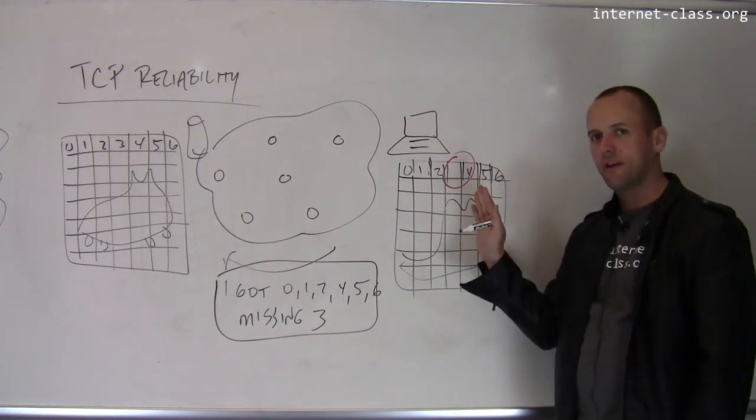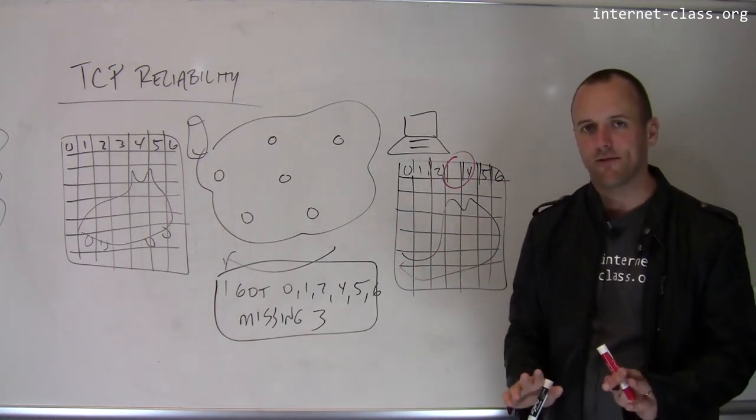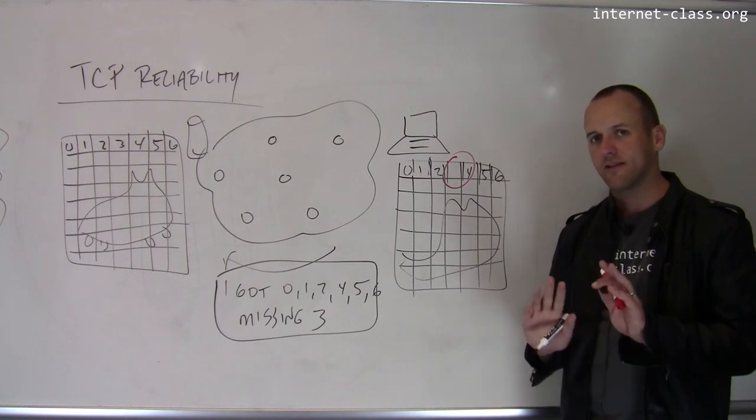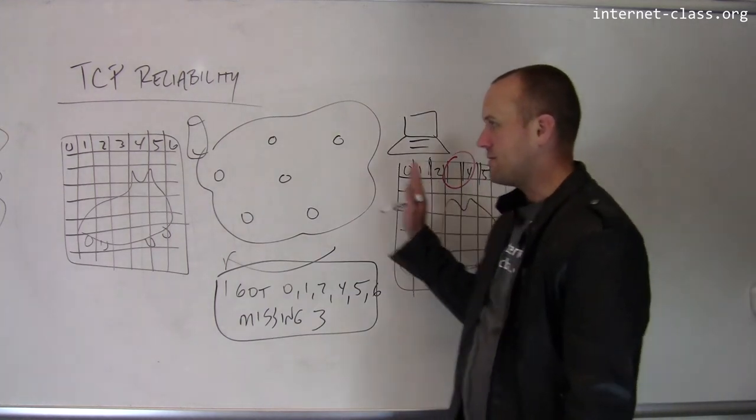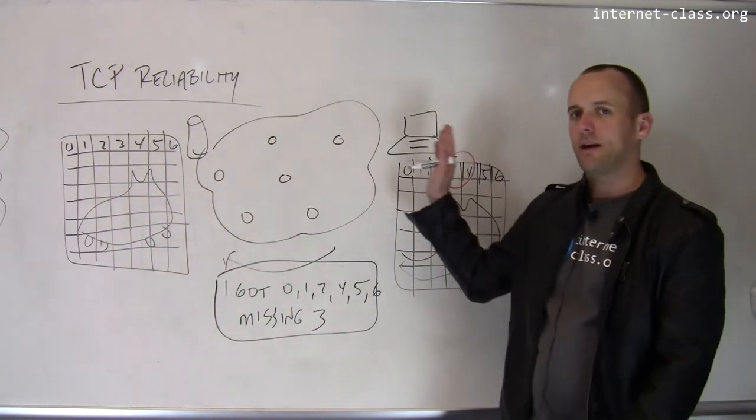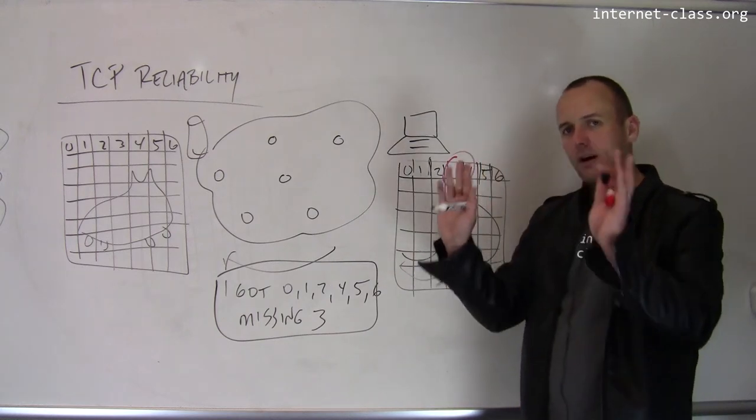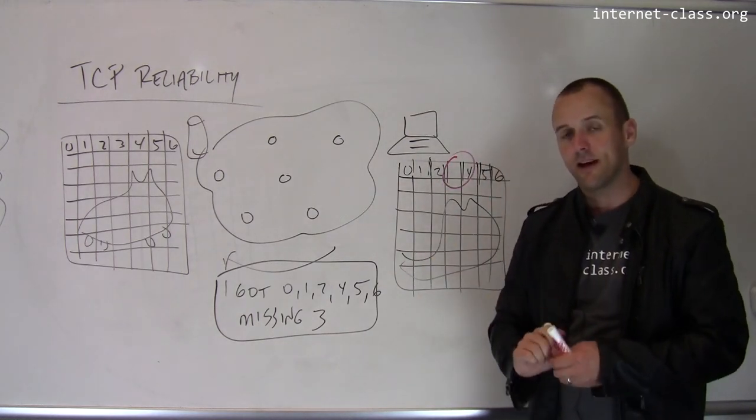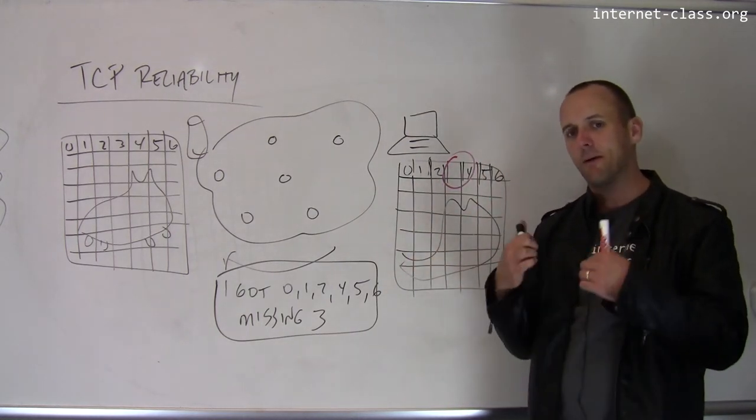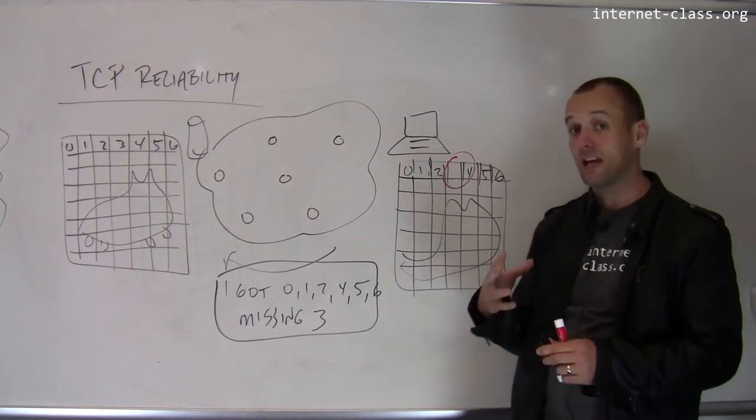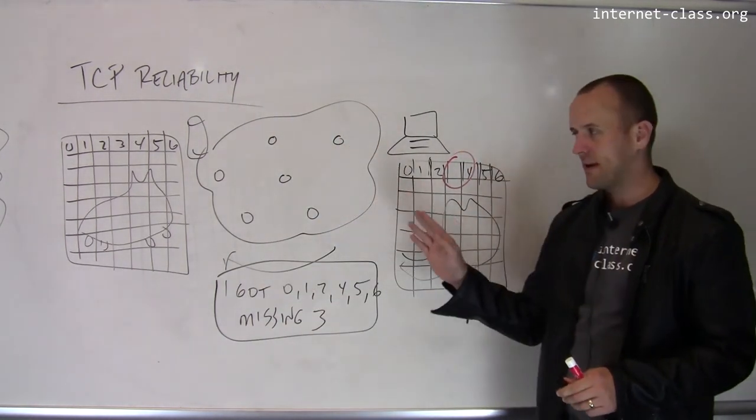But at some point, the receiver has to say, you know what? I've waited long enough for packet 3. I'm pretty sure it's never going to arrive, and I need to inform the sender that packet 3 is missing. So there are, again, a lot of details and a lot of intricacy that makes up how modern TCP implementations actually work, but this is the basic principle.